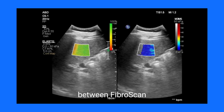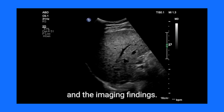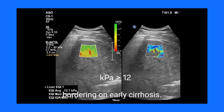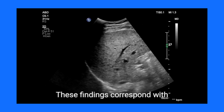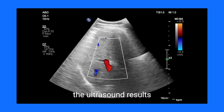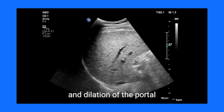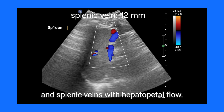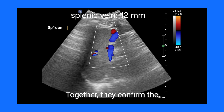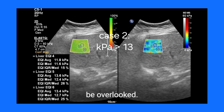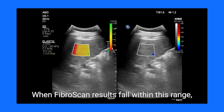Now let's talk about the correlation between FibroScan and the imaging findings. When FibroScan kilopascal values range from 12 to 13.5, it indicates advanced fibrosis bordering on early cirrhosis. These findings correspond with the ultrasound results of a coarse liver texture, the presence of small nodules, and dilation of the portal and splenic veins with hepatopetal flow. Together, they confirm the presence of significant fibrosis and early cirrhosis.